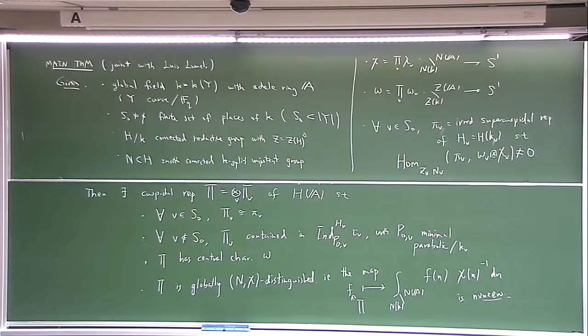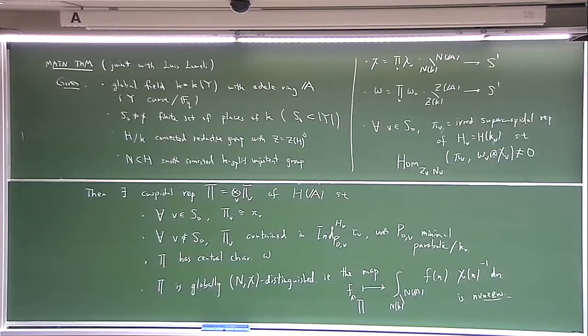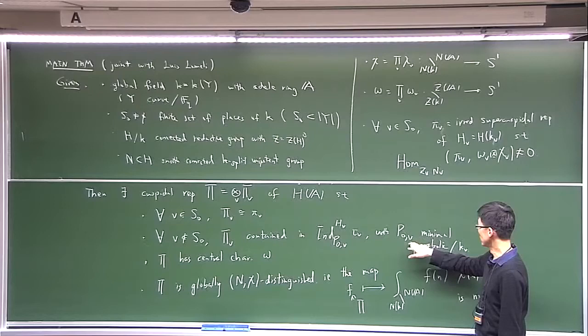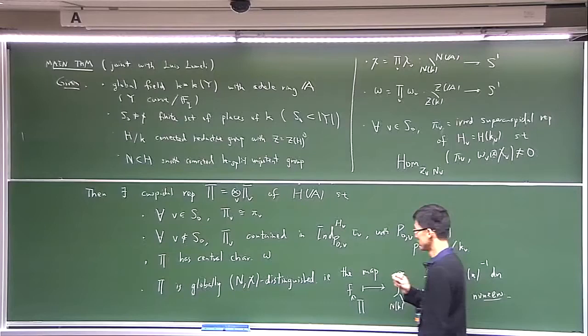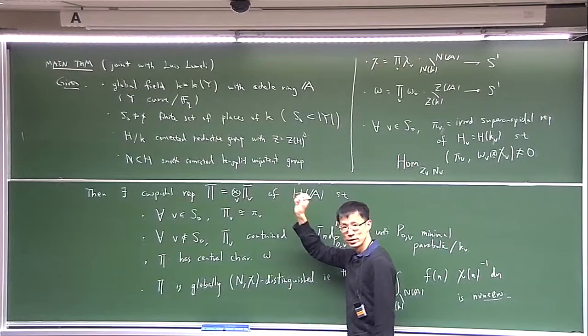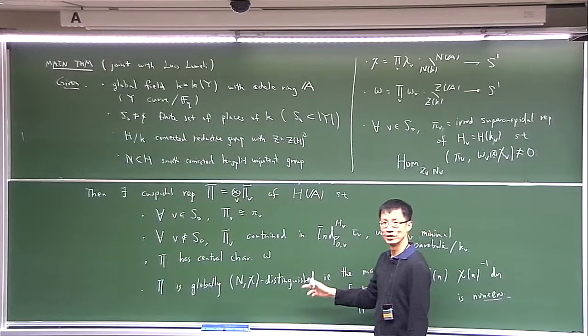Today what I want to do for the first hour is to discuss the proof of this in some detail. For the purpose of the proof, I'm going to make life easier by assuming my group H is split semisimple. Then for every v, H is split as well, so P0_v is just a Borel subgroup. I'm also going to simplify by considering only two cases: one is N is trivial, and the other is when N is the unipotent radical of the Borel subgroup.